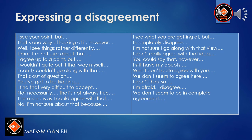Expressing disagreement: I see your point, but. That's one way of looking at it, however. Well, I see things rather differently. I'm not sure about that. I agree up to a point, but. I wouldn't quite put it that way myself. I can't go along with that. That's out of the question. You've got to be kidding. I find that very difficult to accept. Not necessarily. That's not always true. There is no way I could agree with that. No, I'm not sure about that because. I see what you are getting at, but. I completely disagree. I'm not sure I go along with that view. I don't really agree with that idea. You could say that, however. I still have my doubts. Well, I don't quite agree with you. We don't seem to agree here. I don't think so. I'm afraid I disagree. We don't seem to be in complete agreement.